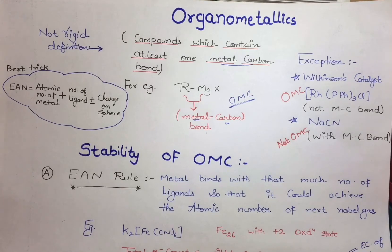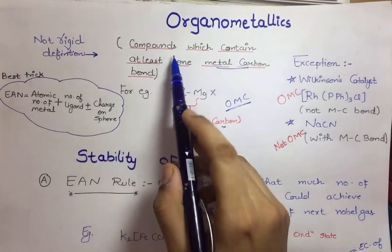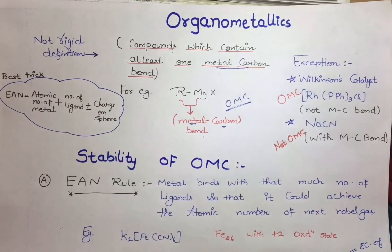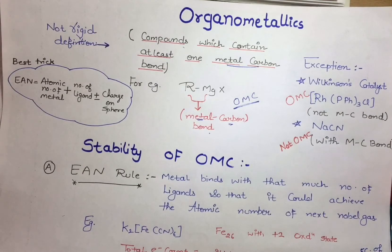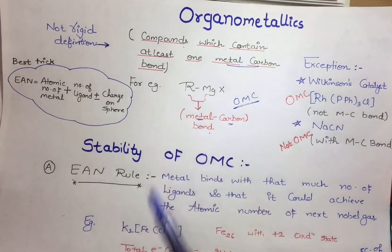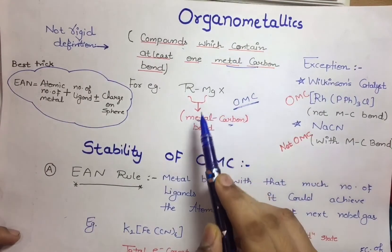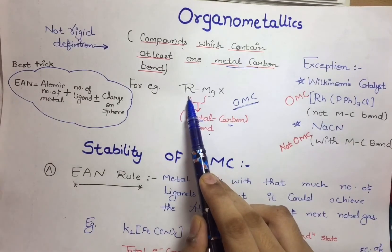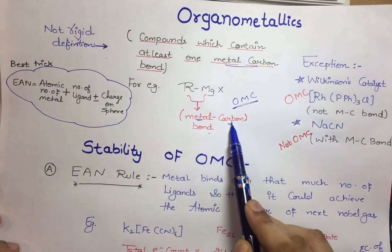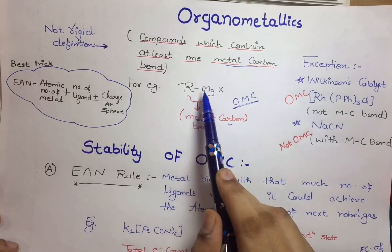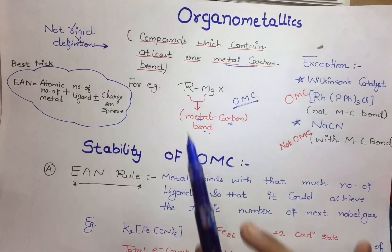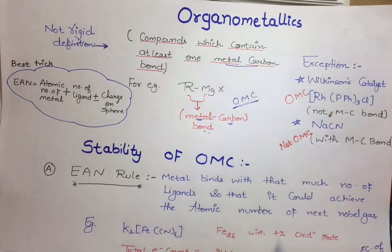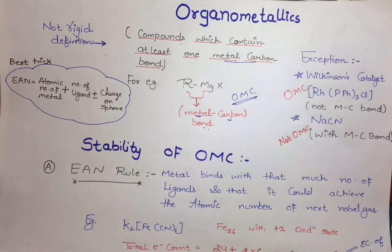Organometallic chemistry deals with molecules that contain a metal-carbon bond. We define an OMC as a compound which contains at least one metal-carbon bond. For example, RMgX is the Grignard reagent, where Mg is magnesium (the metal) and R is any alkyl group (the carbon). So in RMgX, R and Mg form a metal-carbon bond, making it an organometallic compound.